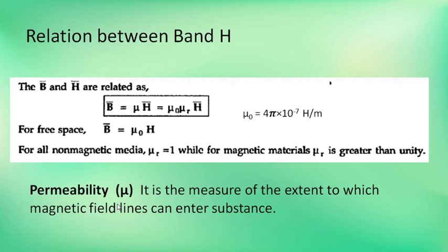Permeability — relative permeability is a material property. Mu r is the value for the material. If you are in free space or non-magnetic materials, mu r is equal to 1. Permeability is a measure of the extent to which magnetic field lines can enter a substance.